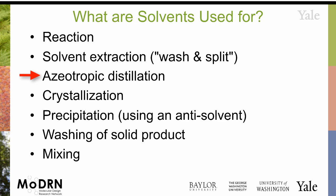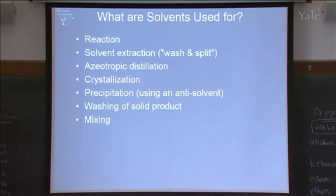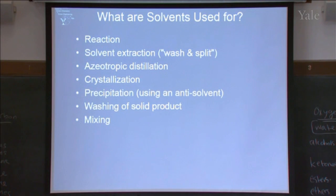Azeotropic distillation — we'll talk more about azeotropes in a bit. This comes up when you're trying to purify a liquid out of a mixture of liquids. What happens is that if you have two liquids with different boiling points, there ends up oftentimes being a fraction — a certain percentage of solvent A, a certain percentage of solvent B — where that mixture has a lower boiling point. So you can save some energy by doing your distillation at that fraction, but the drawback is that you have a mixture of those two solvents and you can't really change that fraction.